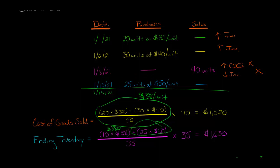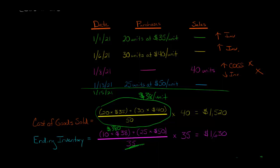Then we make an additional purchase of 25 units at $50 a unit. We add all those costs together and divide by the number of units in ending inventory. This is as of the end of the fiscal period — January 15th. We take all the costs that are remaining and divide by the 35 units in ending inventory, then multiply by 35.